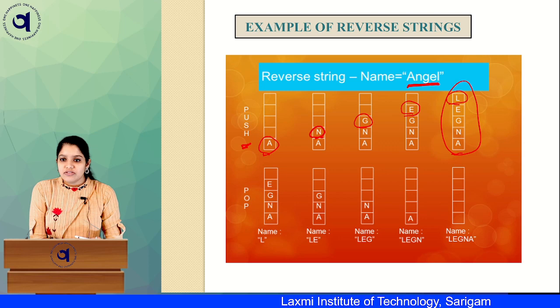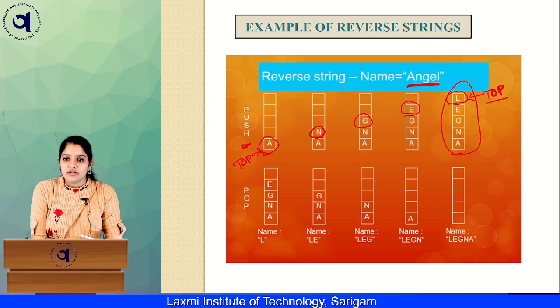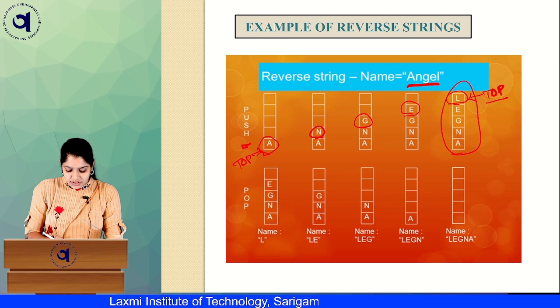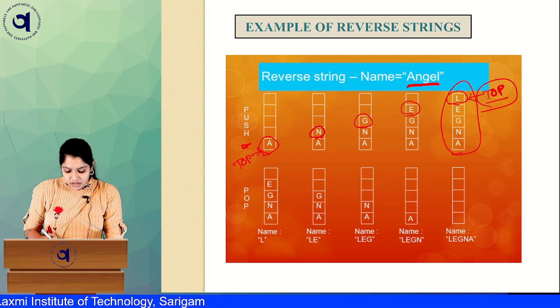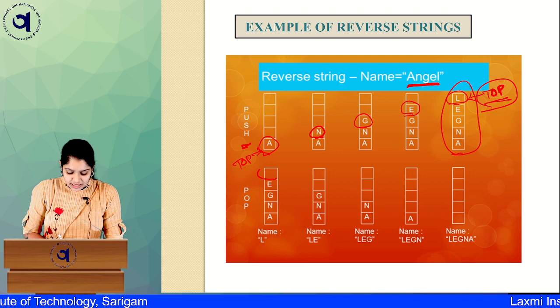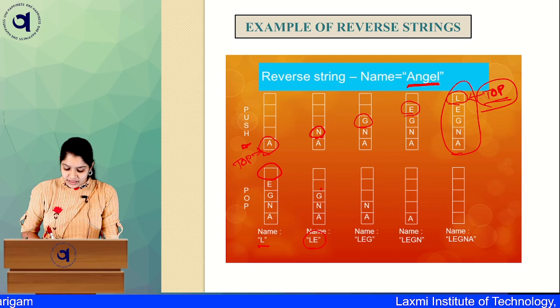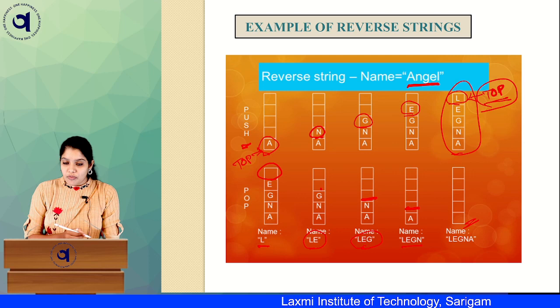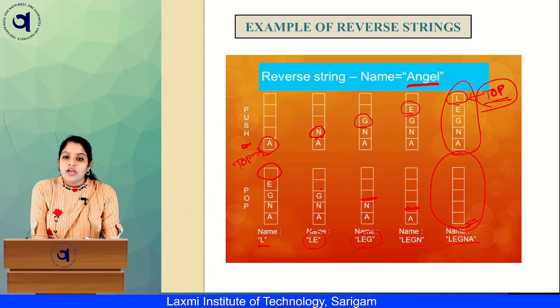Now the next step: we need to pop the characters one by one. As you know, in a stack insertion and deletion take place from one end and the other end is fixed. So from the topmost element we start popping out. First element popped is L, then E, then G, then N, and then A. So we have L, E, G, N, A — that is the reverse of 'angel' — and my stack is now empty.